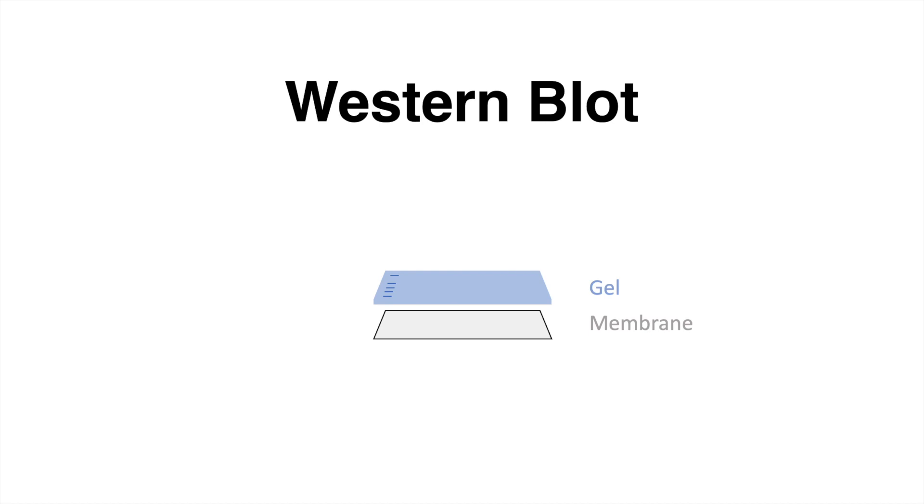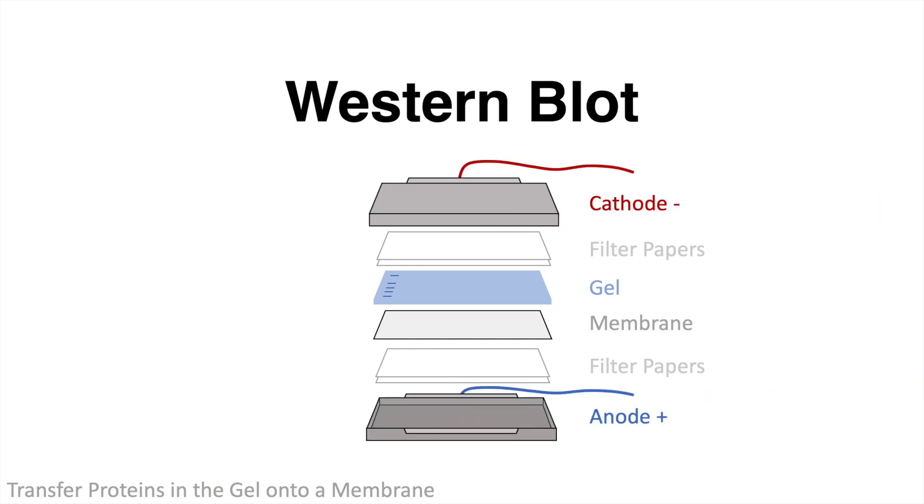Later, the idea is to transfer the proteins from the inside of the gel onto the membrane. This gel membrane construct is flanked on both sides by filter papers. All parts here are soaked in buffer to facilitate the electricity transmission later. Finally, everything is fixed between the cathode and the anode.